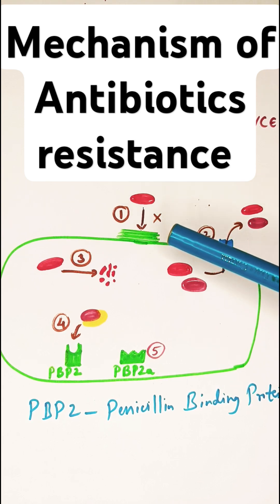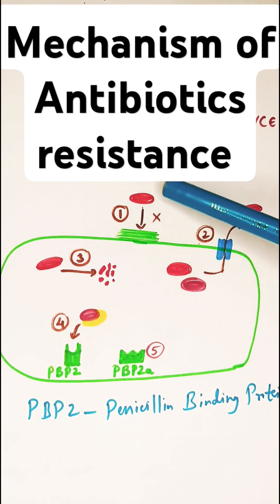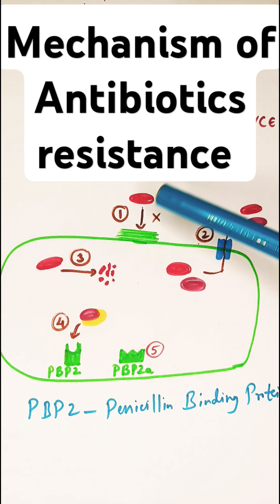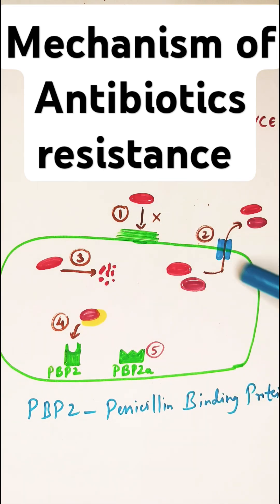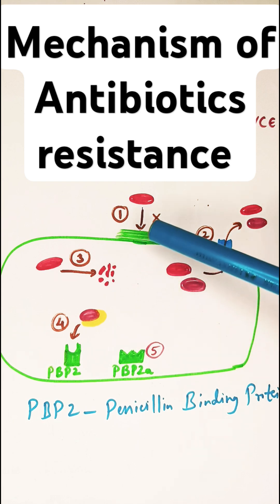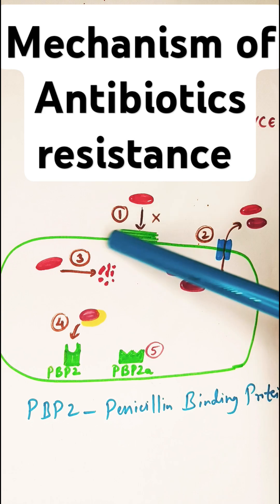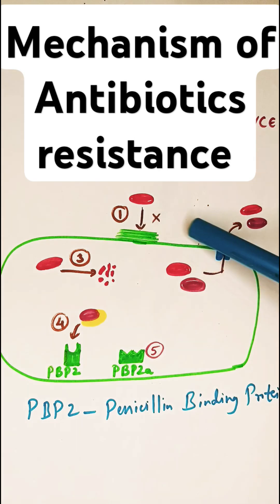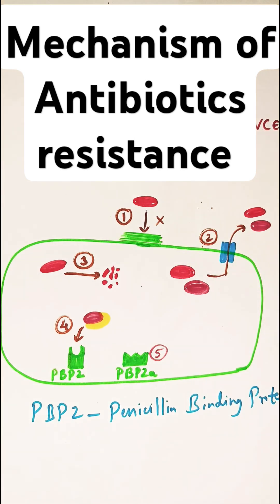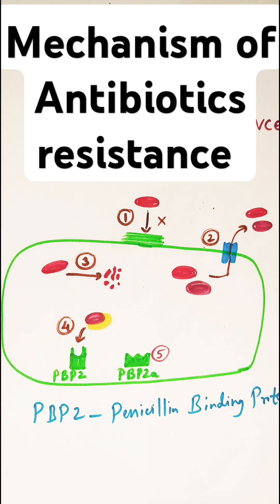The first mechanism is altered membrane permeability, or reduced membrane permeability. Here, the red color represents an antibiotic and the green color represents bacteria. The antibiotic is trying to enter the bacteria, but the membrane wall has become very thick. I've limited the thickening of the cell wall to only this area for representation purposes, but remember all around the bacteria the cell wall will get thickened. The bacteria has modified its outer membrane so the antibiotic is not able to enter into the cell.